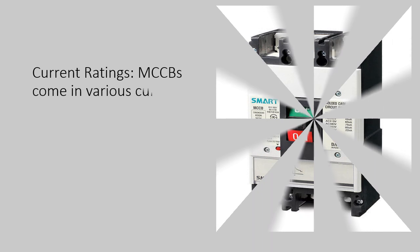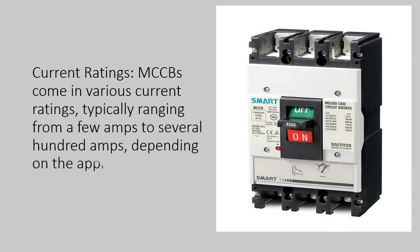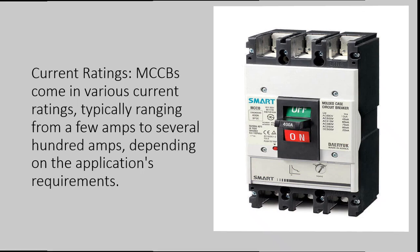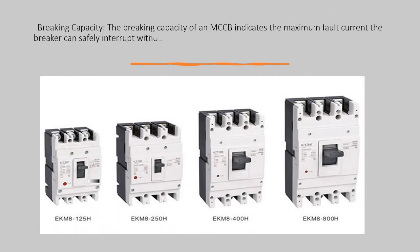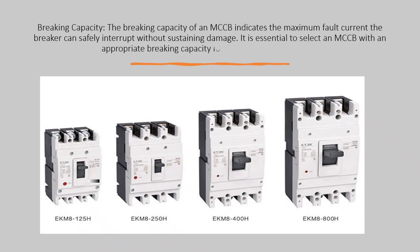4. Current Ratings — MCCBs come in various current ratings, typically ranging from a few amps to several hundred amps, depending on the application's requirements. 5. Breaking Capacity — the breaking capacity of an MCCB indicates the maximum fault current the breaker can safely interrupt without sustaining damage. It is essential to select an MCCB with an appropriate breaking capacity for the system it will protect.